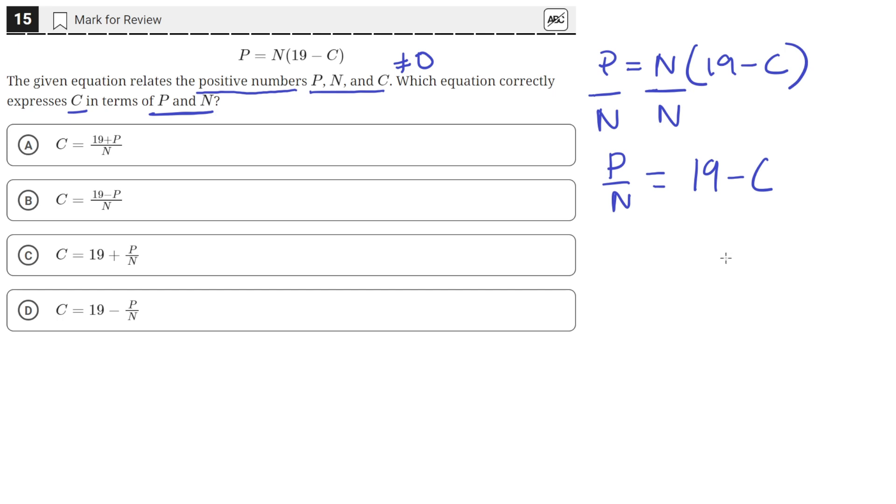And now we can subtract 19 from both sides so that the right-hand side 19 minus 19 becomes 0. We'll just be left with negative C. And on the left-hand side, we'll have P over N minus 19.